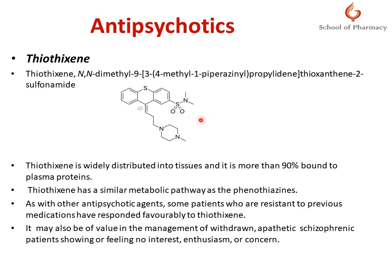That high plasma protein binding is a very good indication of affinity. Thiothixene has a similar metabolic pathway as the phenothiazines, although it looks like a somewhat different moiety.